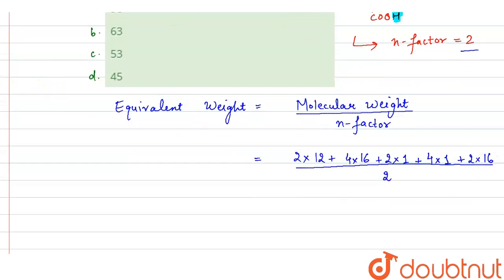So from here it comes out to be, when we calculate here molecular weight, it comes out to be 126 divided by 2. So it will be equal to 63.